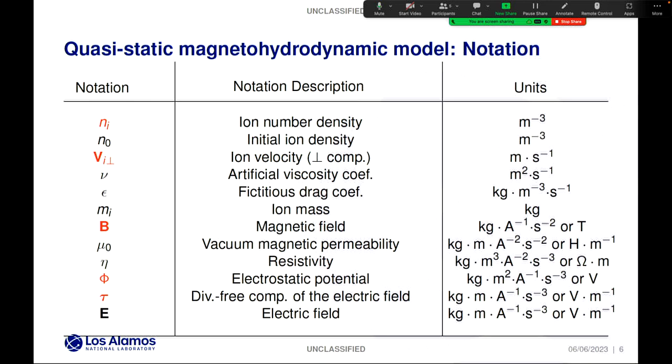This table explains the notation used for the various unknowns and constants involved in this model. The fields colored in red are the ones we will be using in the final model: the ion number density, the ion flow, the magnetic field, and the two components of the electric field.